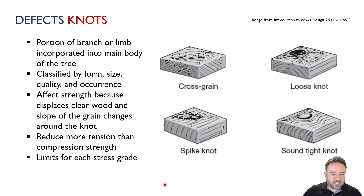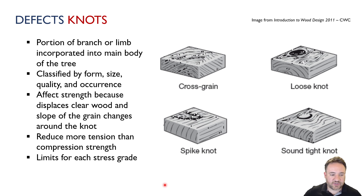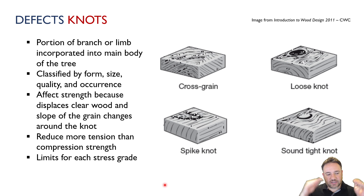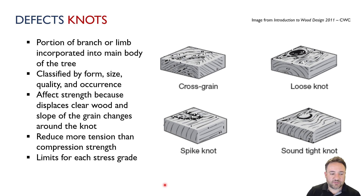Knots, as we discussed when we talked about the structure of trees, are basically parts of branches that are within the body of the tree. You can classify them by different shapes and sizes, how many there are, and where they are. The thing about knots is they affect strength because they basically represent an interruption in the grain. Wood is very strong parallel to grain, and if that grain is continuous, that strength continues all the way through. But if we have a knot that interrupts it, then we are going to have some kind of weakening of that overall piece of wood.